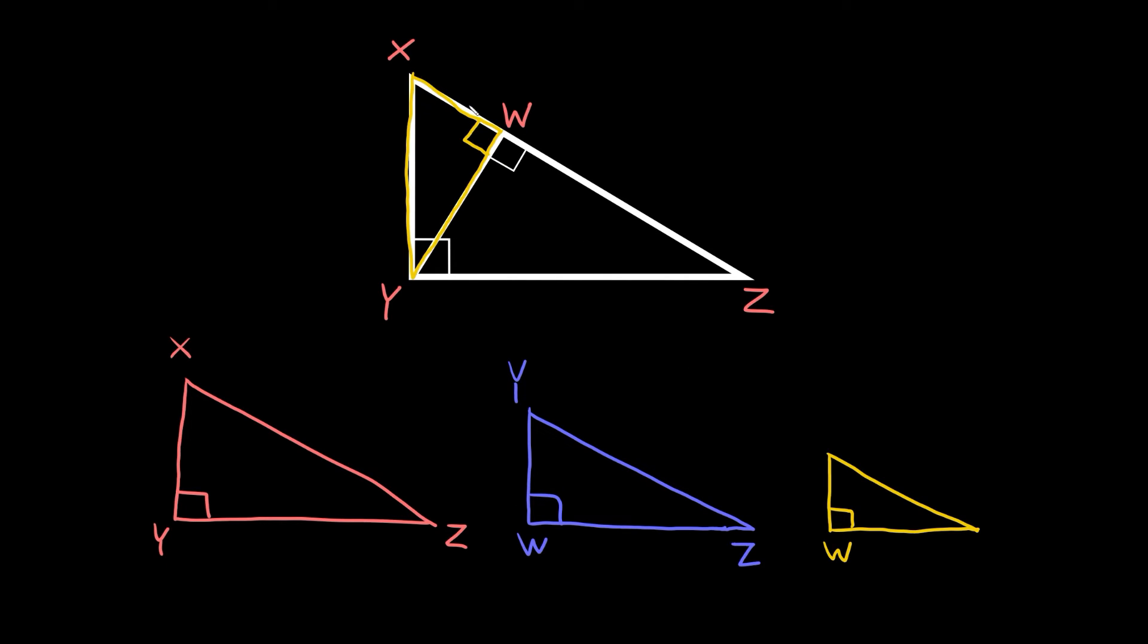Now over here you can see the short side goes from W to X. So the short side of this triangle must also go from W to X. And then we have the last angle over here that we haven't used which is Y. So the last angle over here must also be Y.